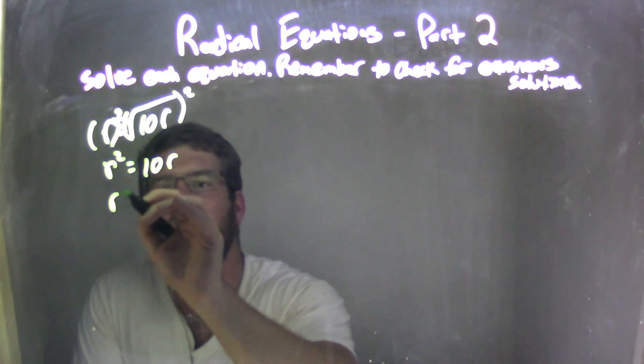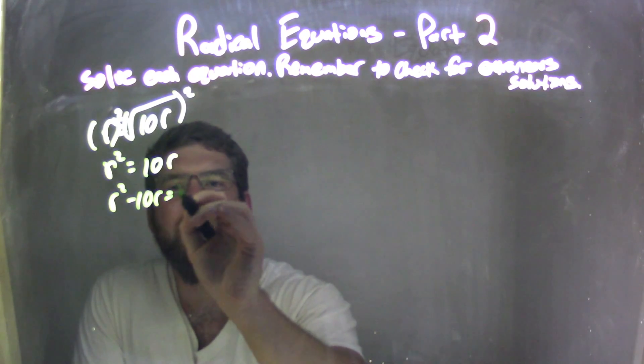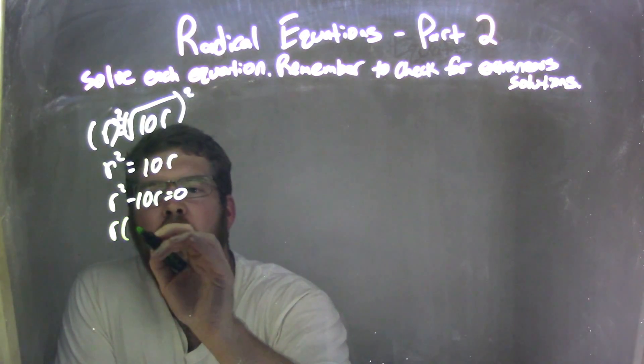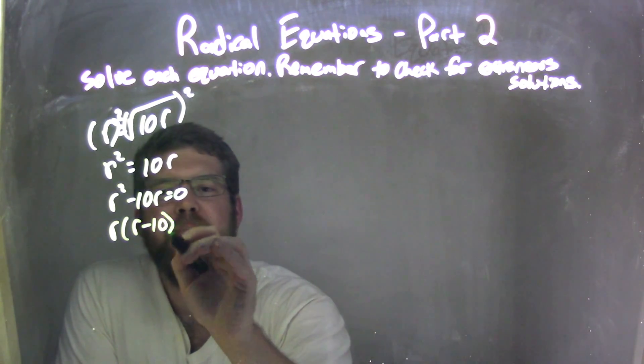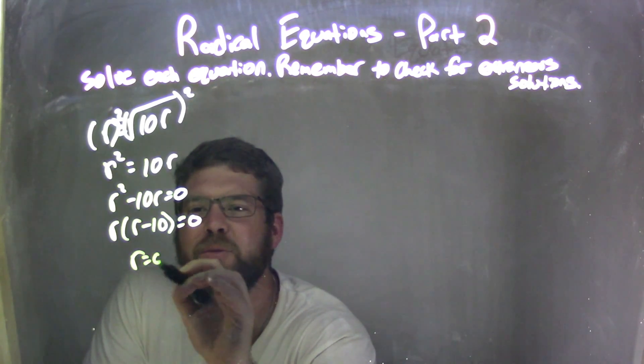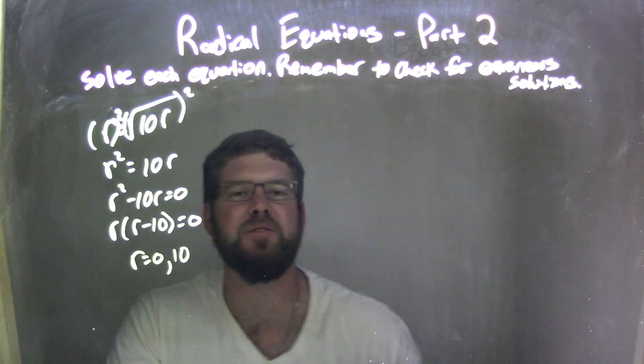Let's bring the 10r over. r squared minus 10r equals 0. Then we'll factor, let's just pull out that r. So r times r minus 10 equals 0. We set both parts equal to 0 here, and so we have r equals 0 and positive 10 are our two solutions.